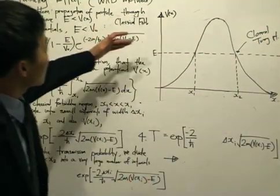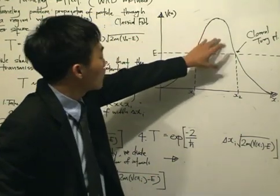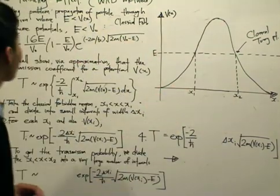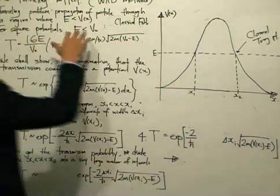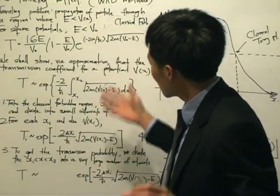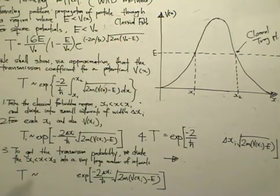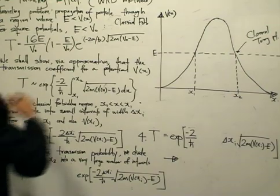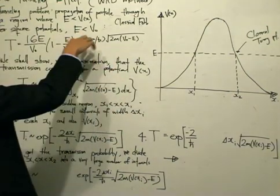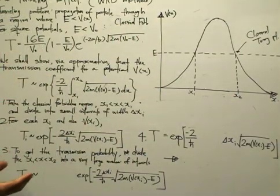At the classical turning points, as the particle approaches the barrier it can't exist in this area because the kinetic energy would be less than zero, so it needs to turn back — that's why it's called a turning point. For the square potential, when the energy is less than V₀, the transmission coefficient is given by this expression here. It looks a bit messy, but it's an analytical expression which is quite neat.